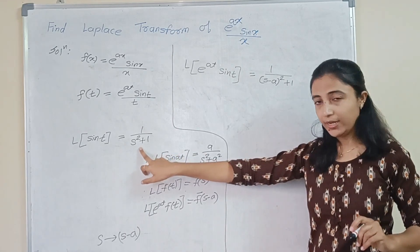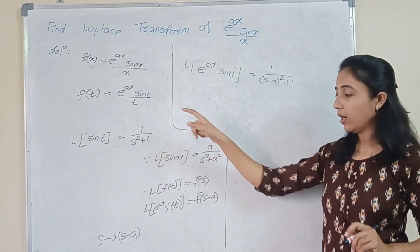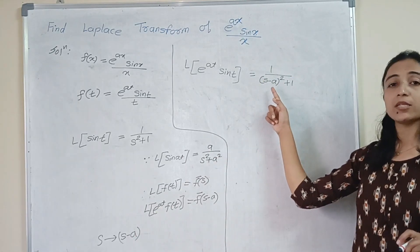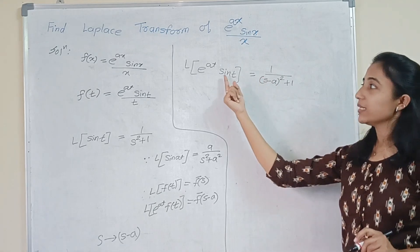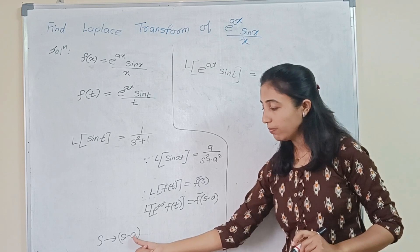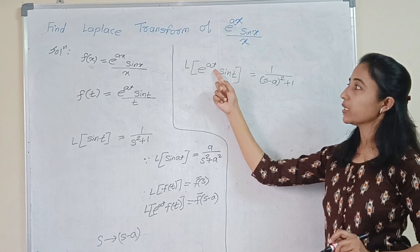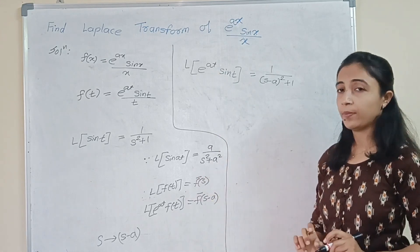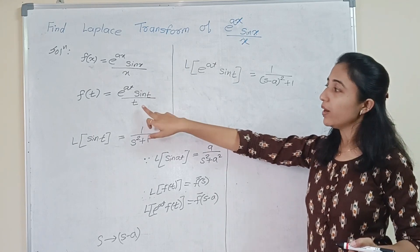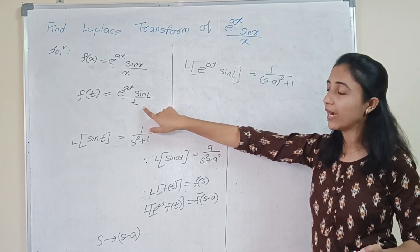So in the answer for sin t, wherever s appears, the replacement is s minus a. That is the shifting property — sin t multiplied by e raised to the power at shifts s to s minus a. Now we have found the Laplace of the numerator term. The next step is to find the Laplace of the complete term, meaning we have to divide it by t.